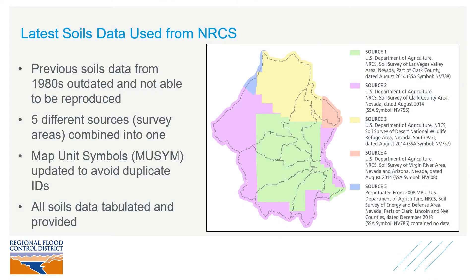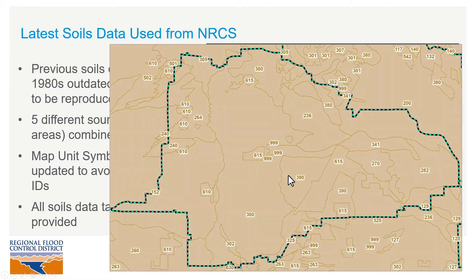The latest soil survey data from NRCS was used in the 2018 MPU. There are five different areas or soil surveys that were downloaded, formatted, and combined into one comprehensive layer in GIS. This data represents the latest and best available information in the Las Vegas Valley. In GIS, each soil map unit area is delineated with a polygon and has a corresponding map unit number — a three-digit code. For example, 615 is the map unit number for a particular polygon in the middle of the screen.